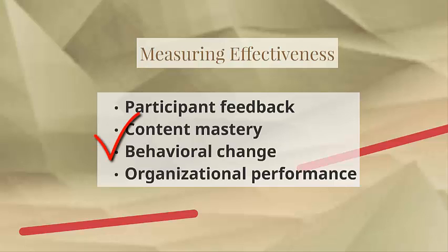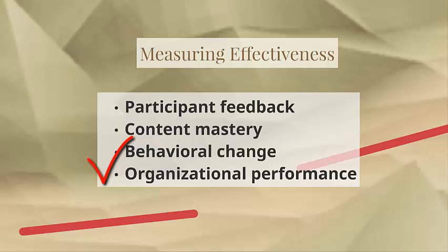Behavioral change is more difficult to measure and can be impacted by things other than the training itself, but this is a clearer indication of training effectiveness because it measures actual performance on the job before and after the training. Of course, in my experience, improvements in performance are generally attributed to the training, whereas declines or no improvement are usually attributed to other things, so these measures may not be entirely accurate either. Finally, organizational performance should improve on a grand scale over time if effort is put into effective training programs. All of these measures should be used since none of them are perfect. If you take them all into consideration when evaluating training programs, you'll be able to make better decisions and improvements than if you look at one measure in isolation.